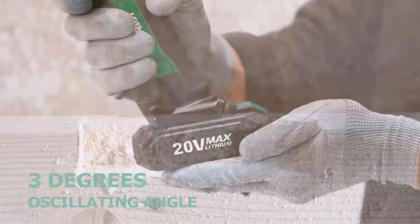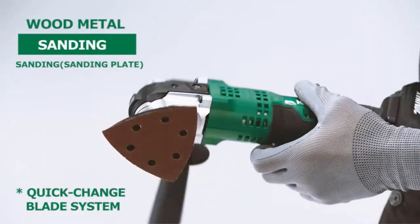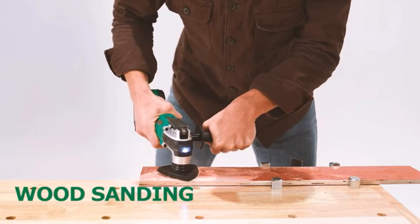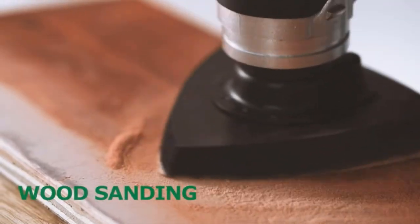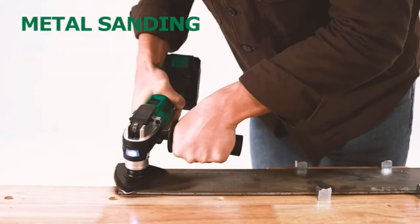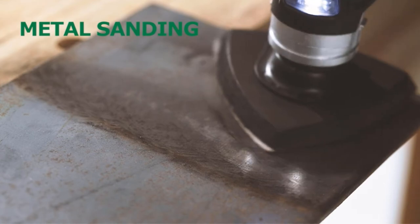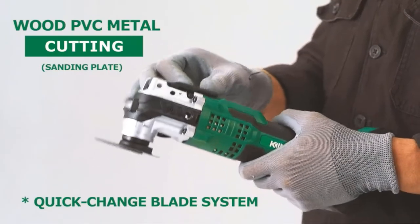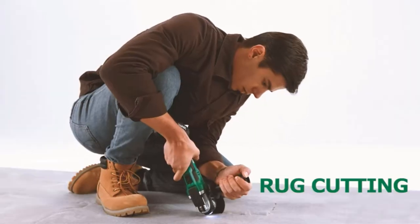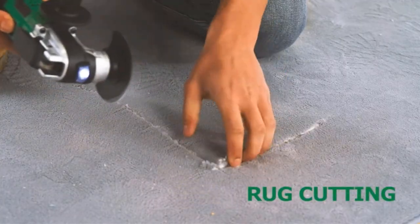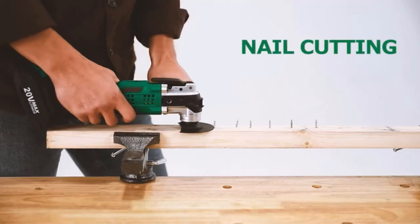This 3-degree oscillating angle provides the best cutting performance and comfort for long-time usage. There are two lights designed for using. One is the power indicator light that will let you know how much power is left. Another is LED light that will help you working in a dark environment.